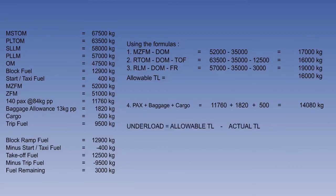Finally, we have all the information to complete step three — calculating the underload. This is the actual traffic load of 14,080 kilograms subtracted from the allowable traffic load of 16,000 kilograms, which gives us an underload mass of 1,920 kilograms.